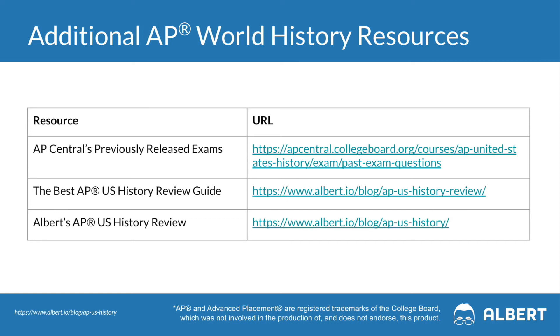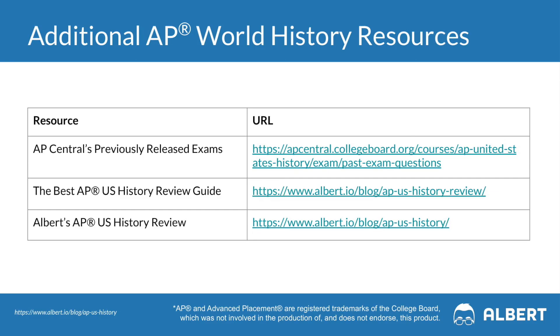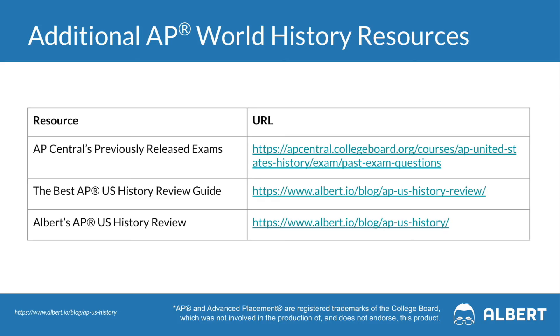Here are three additional APUSH resources you may find helpful in your exam prep, like we promised at the beginning of the video. The first one is College Board's AP Central, where you'll find a ton of previously released exams as well as scoring guidelines and rubrics. The second resource is Albert's free AP US History review guide, a self-paced guide to help you prepare for your exam. The third is Albert's AP US History review course, which has hundreds of original practice questions, free response questions, and full-length practice exams so you can learn by doing, get immediate feedback, and build on your weaknesses.